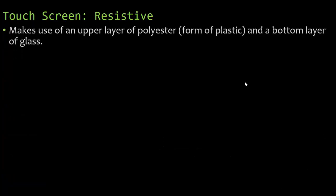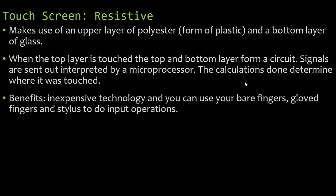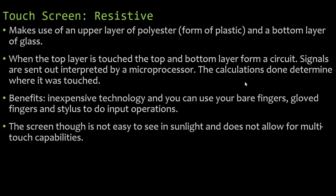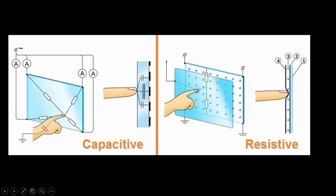The resistive touchscreen makes use of an upper layer of polyester — essentially plastic — and a bottom layer of glass. When the top layer is touched, the top and bottom layers connect to form a circuit, signals are sent and interpreted by a microprocessor to determine where it was touched. The benefits are it's inexpensive and you can use bare fingers, gloved fingers, or a stylus. The drawbacks are the screen is not easy to see in sunlight, does not allow multi-touch capabilities, can scratch easily, and the screen will wear out over time. Study the benefits and drawbacks of each.